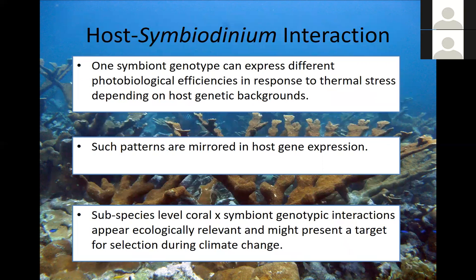Overall for this section: one symbiont genotype can express different photobiological efficiencies in response to thermal stress depending on the host genetic background, and those patterns were mirrored in host gene expression. Thus, subspecies-level coral and symbiont genotypic interactions appear ecologically relevant and may present a target for selection during climate change. These findings together provide some evidence that the extended phenotype concept may be useful when thinking about how corals may adapt and acclimatize to a rapidly changing environment.